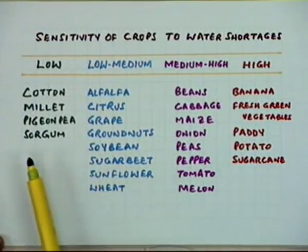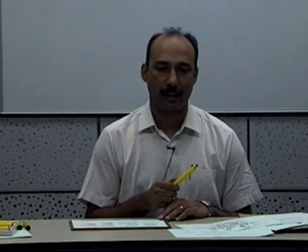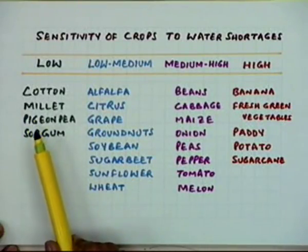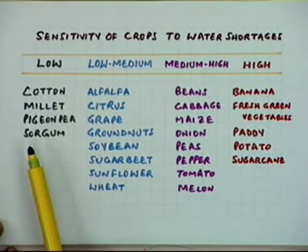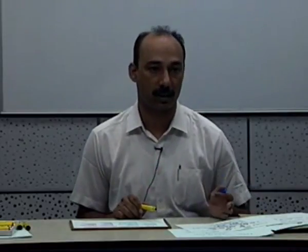All crops can be put under one of these four categories. While thinking of water management, these aspects have importance because you have to find out from where you can save moisture. All those crops which are very lowly sensitive — where sensitivity is very low — you can let those crops wait for moisture availability, or irrigation can be delayed. You might be in a position to wait for natural rain or some other similar situations.